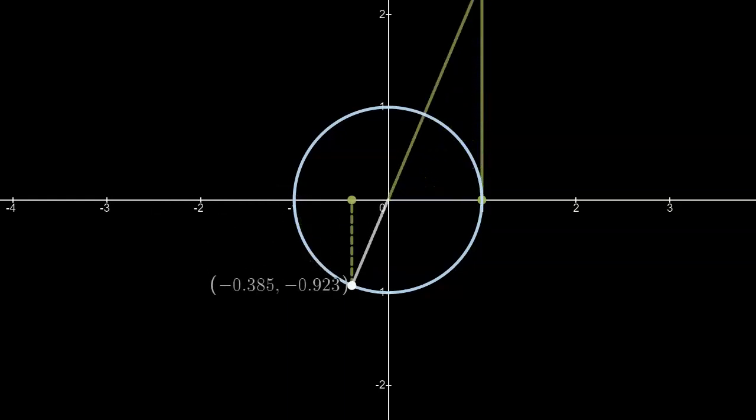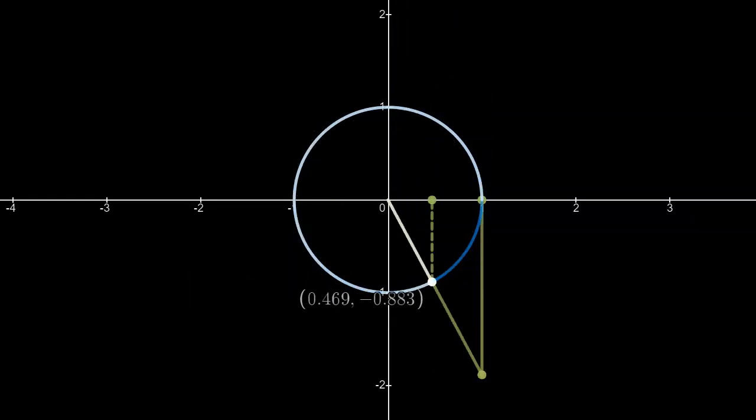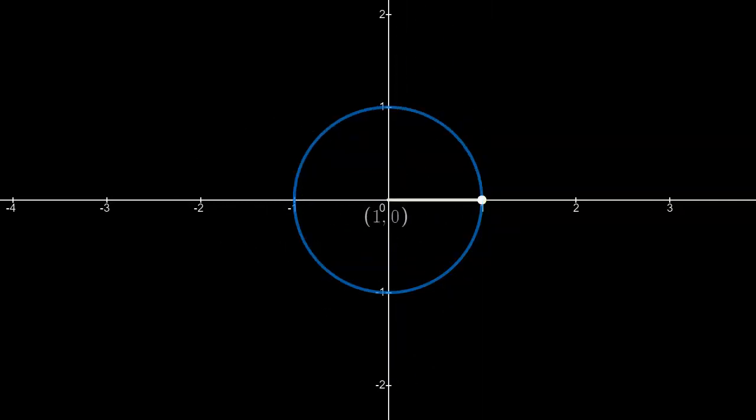And then finally, in quadrant 4, large negative values down to small negative values. Now, let's take a look at what this all means for our graph of y equals tan x.